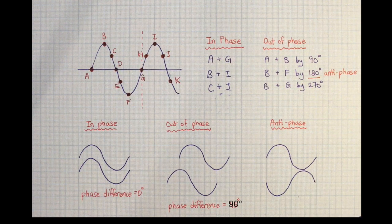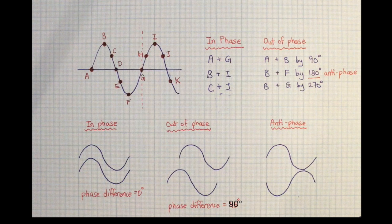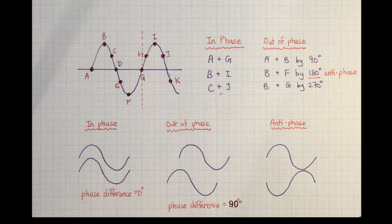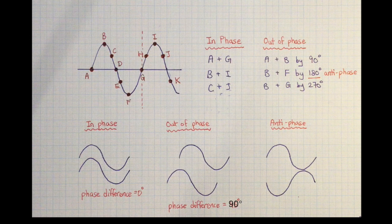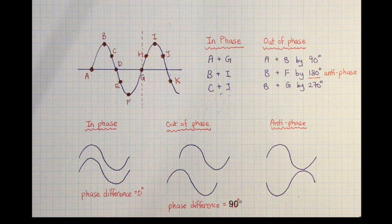If you ever forget the phase at a certain point in a wave, the trick is to always go back to a circle. A complete oscillation is 360 degrees, just like a circle.